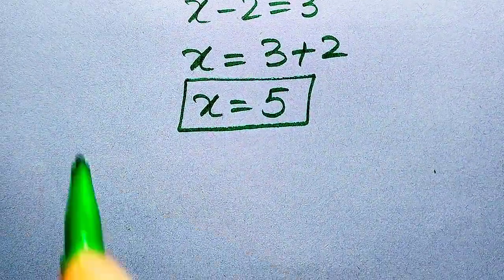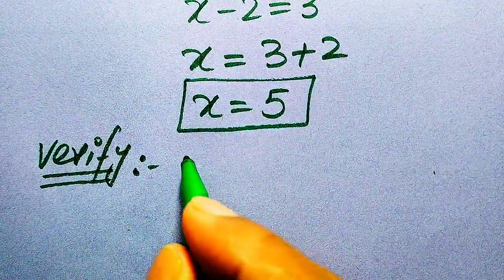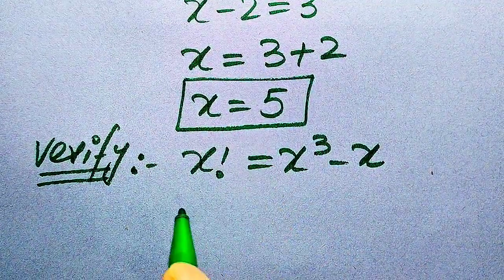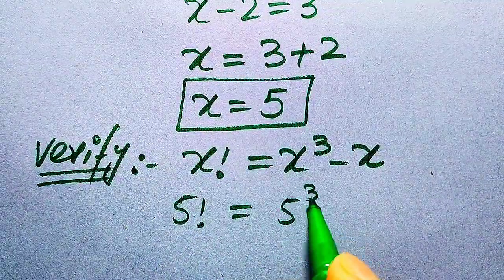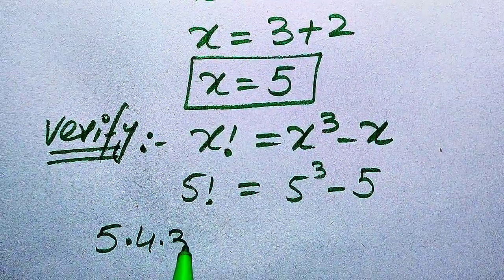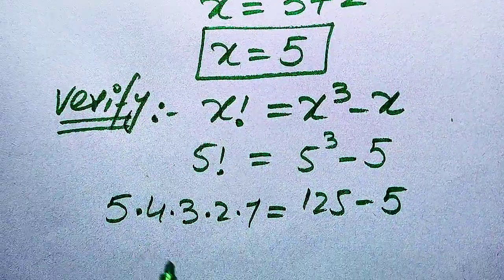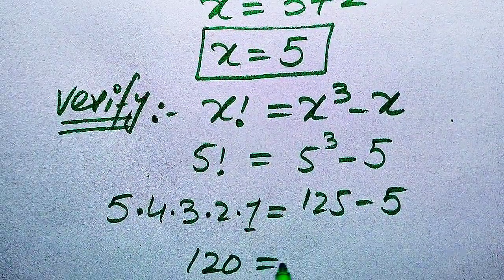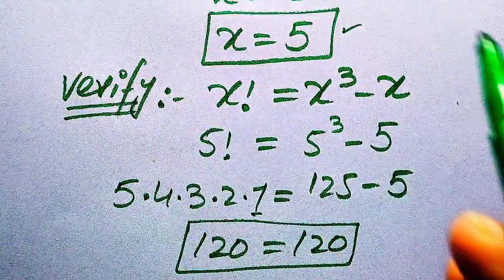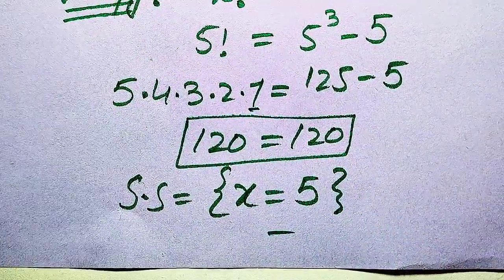We now verify this answer. The original equation is x factorial equals x cubed minus x. Substituting x equals 5 gives 5 factorial equals 5 cubed minus 5. We compute 5 factorial as 5 times 4 times 3 times 2 times 1 equals 120, and 5 cubed minus 5 equals 125 minus 5 equals 120. Since both sides equal 120, x equals 5 is confirmed. The solution set is x equals 5.